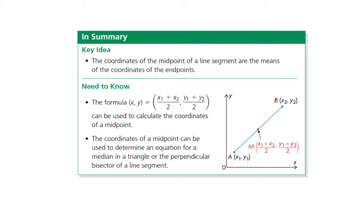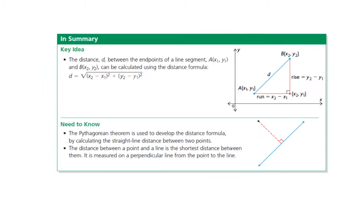If you recall, if you have two coordinates, you can figure out the midpoint of that line segment with this formula. If you want to figure out the distance between two coordinates, all you need are the coordinates of those two points and this formula.